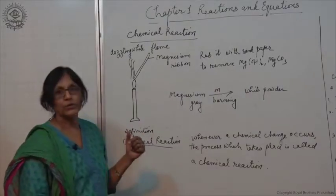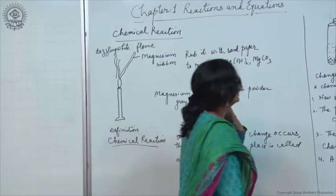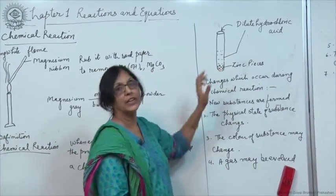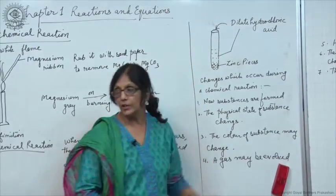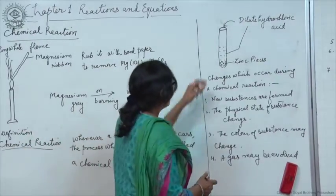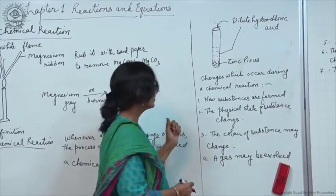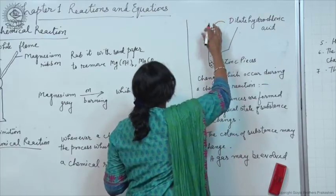Let us now consider another activity to be performed in the lab. Take a test tube and put some zinc pieces in it and now add some amount of dilute hydrochloric acid. Now, on adding dilute hydrochloric acid, what will you observe? You will observe that certain gas evolves.